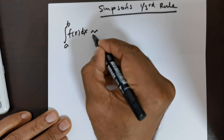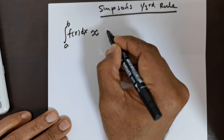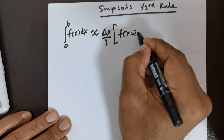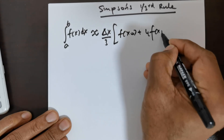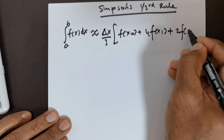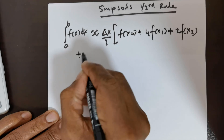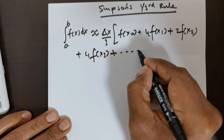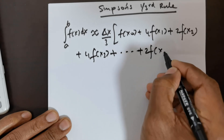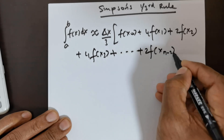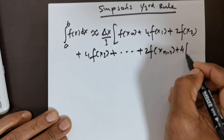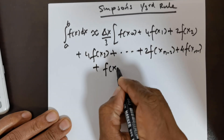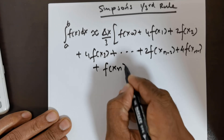This approximation is given by delta x over 3, times f(x₀) plus 4 times f(x₁) plus 2 times f(x₂) plus 4 times f(x₃), and so on, plus 2 times f(x_{n-2}), plus 4 times f(x_{n-1}), plus the last quantity f(x_n).